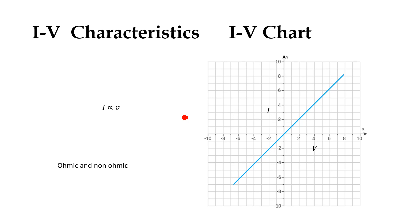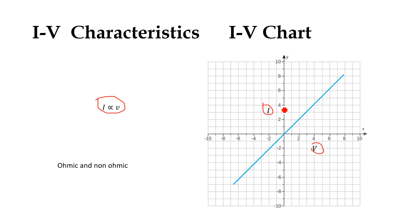Hello everyone, welcome to EGDU. Today we are going to discuss the IV characteristic, also known as the current-voltage graph or current-voltage chart. We have an XY coordinate system where the X-axis represents voltage and the Y-axis represents current. If we increase the voltage in a circuit, the current linearly increases — this is a direct relation between current and voltage. We will explain in detail what ohmic and non-ohmic semiconductors are, what the slope of an IV characteristic is, and how to calculate resistance and conductance using an IV chart.